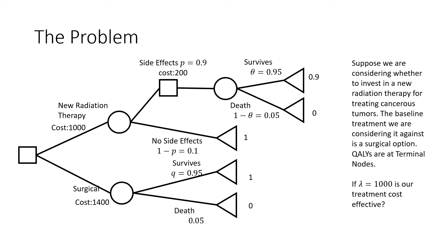Suppose we are considering whether to invest in a new radiation therapy for treating cancerous tumors. The baseline treatment that we're considering is a surgical option. The qualities are at the terminal nodes here. If our threshold is equal to 1000, is our treatment cost effective or not?